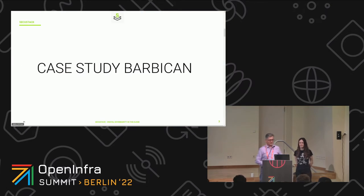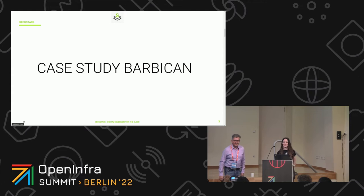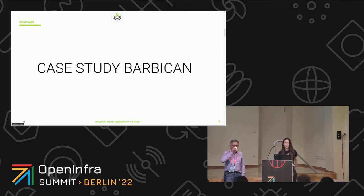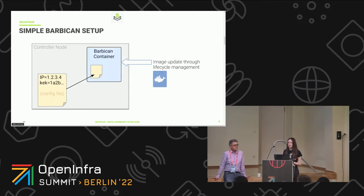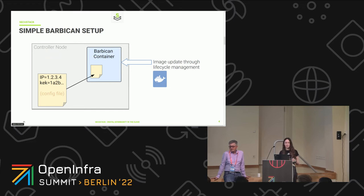Now Josefina will give you more insights into what we really did. My name is Josephine Seifert, I'm a developer at SecoStack. Some of you might know me as a contributor to OpenStack — normally I'm more directly into the OpenStack code. I will give you an overview about our case study with Barbican on the control plane. We started with a very simple Barbican setup: a controller node with a Barbican container, a config file, and lifecycle management for any outdated images.